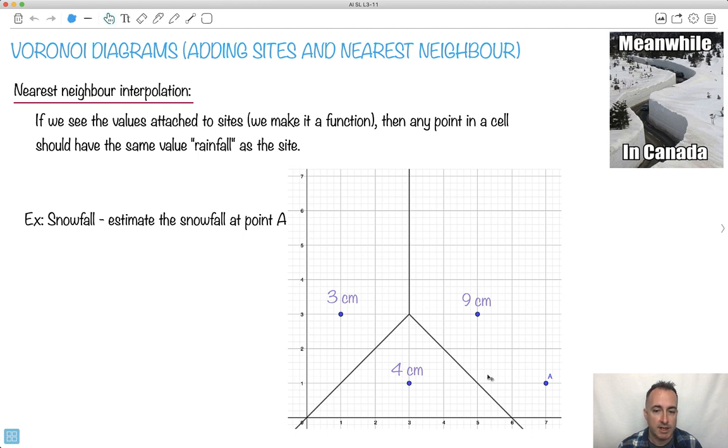So what that would mean is that anyone in this region, then we're going to use the nearest neighbor interpolation and say anyone who lives anywhere in this will have received 9 centimeters of snowfall. And anyone over here, since this is their nearest neighbor, that's going to be 3 centimeters. And over here, anyone who lives here got 4 centimeters, at least if we're trying to estimate.